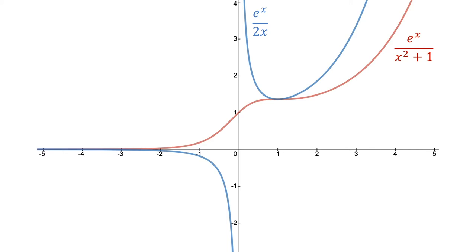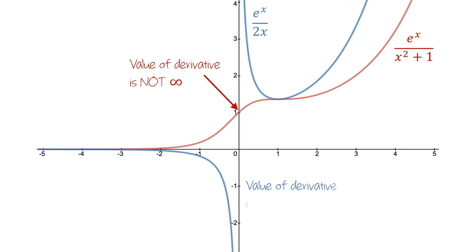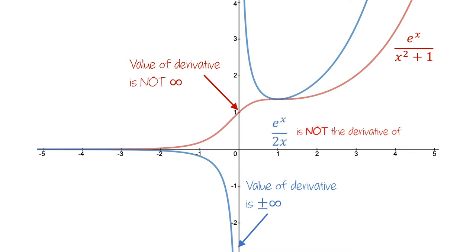If we look at x equals 0, the red graph appears to have a slope that isn't too large — certainly its slope is not infinite. But the blue graph is supposed to show the derivative, and if we look at x equals 0, the blue graph has a value that is infinitely large. So our guess, e to the x divided by 2x, is not the derivative of e to the x divided by x squared plus 1. It didn't work just to take the derivative of the numerator and denominator.